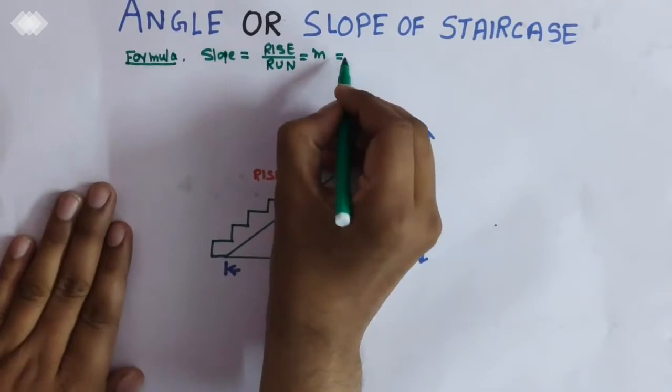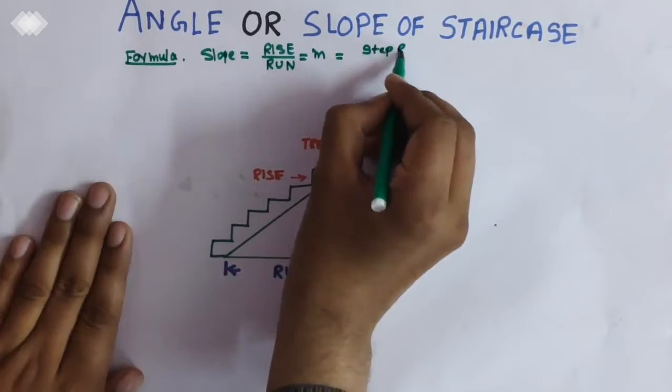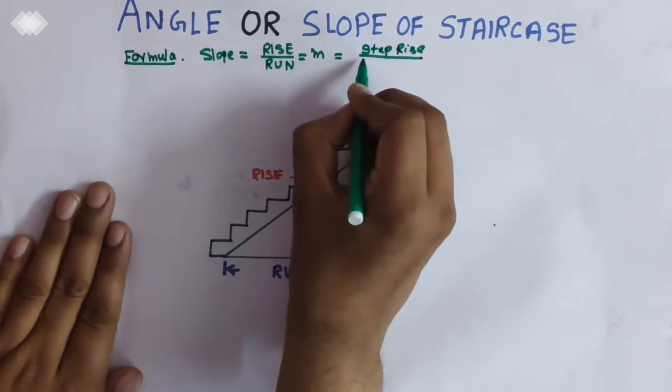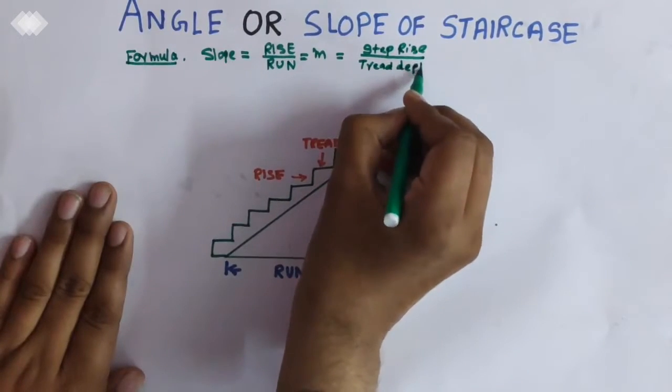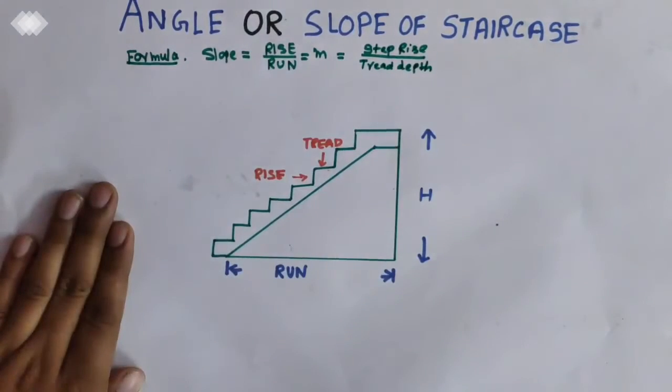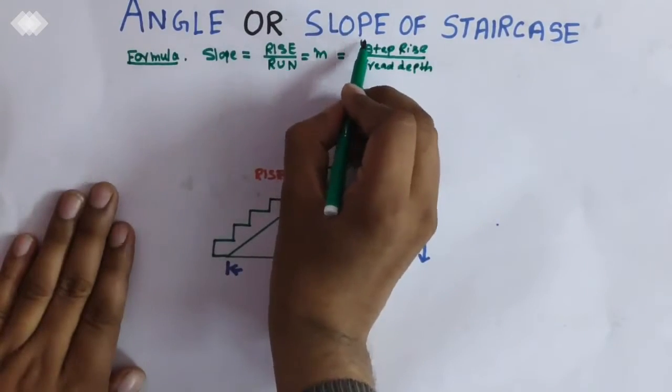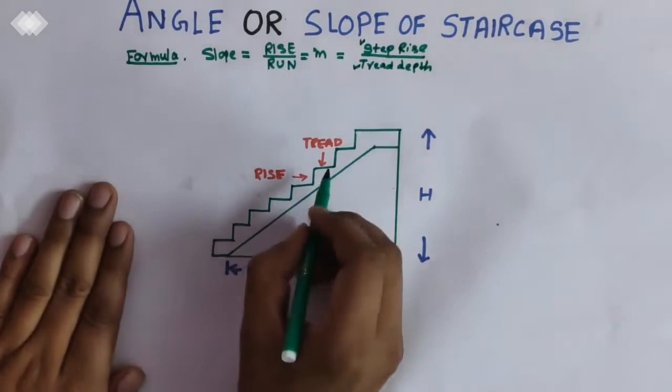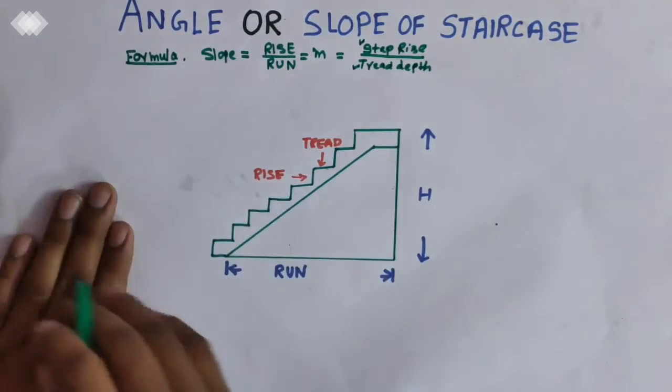Or you can say this rise is step rise, or you can say this is tread depth. Now the term is step rise and here in division tread. So you must know what is tread. Tread is this and rise is this.